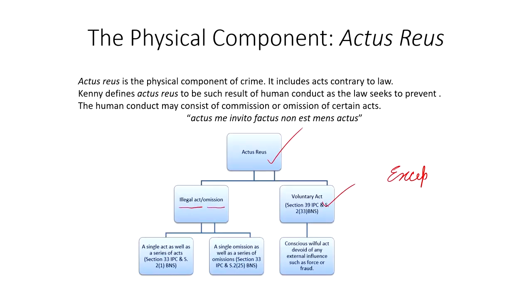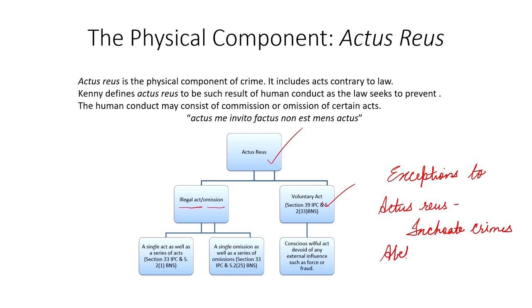That is a very essential component of criminal law. But there are certain crimes which are punishable even without proof of actus reus or even without proof of actual harm. These are known as inchoate crimes — also known as incomplete crimes. The inchoate crimes are abetment, conspiracy, and attempt. These three crimes are known as inchoate crimes which are punishable even without proof of actus reus.